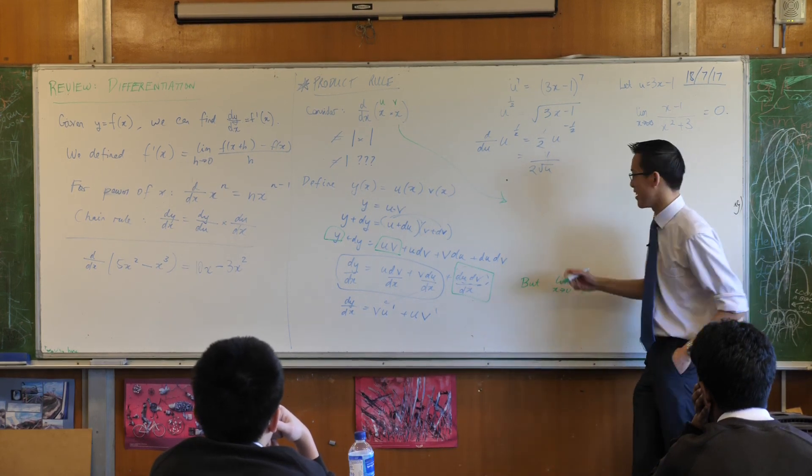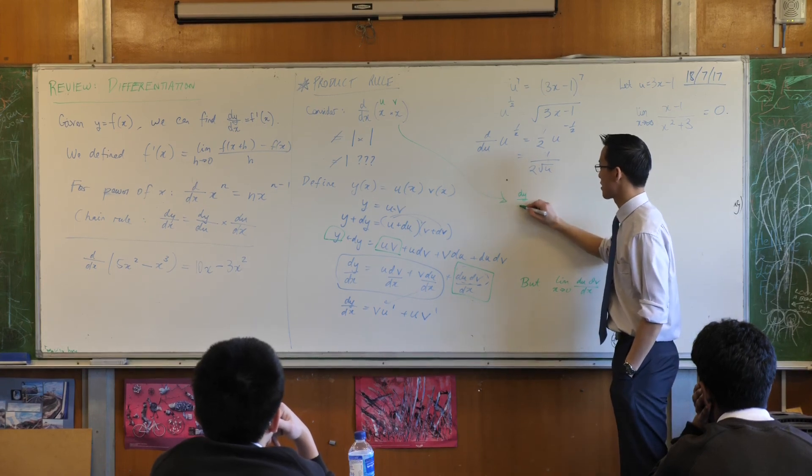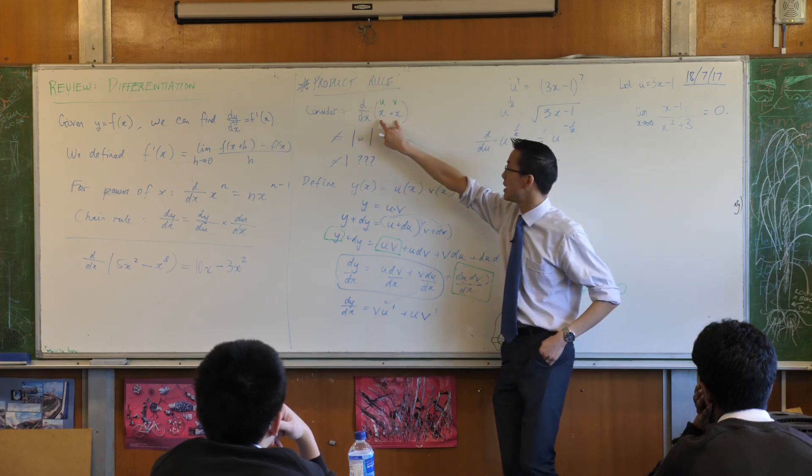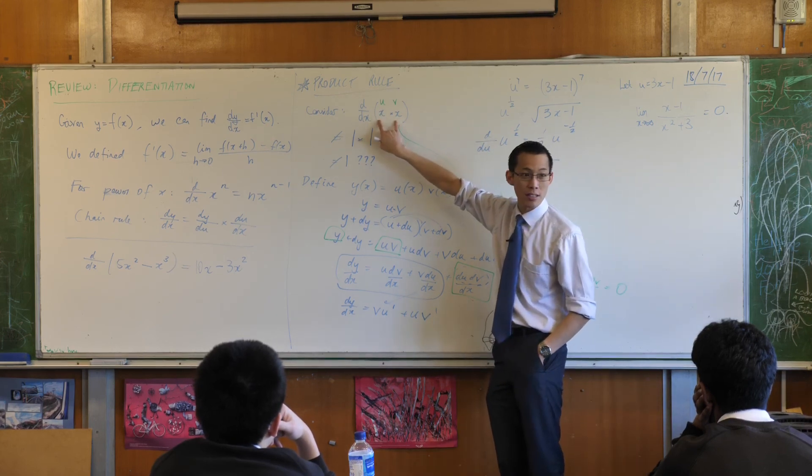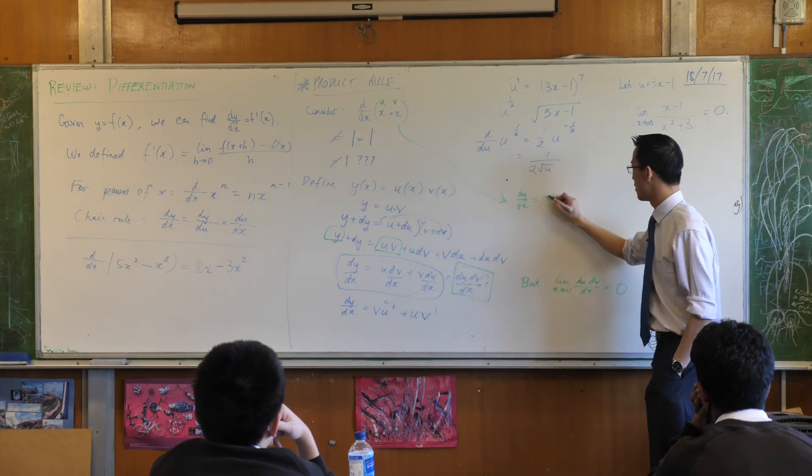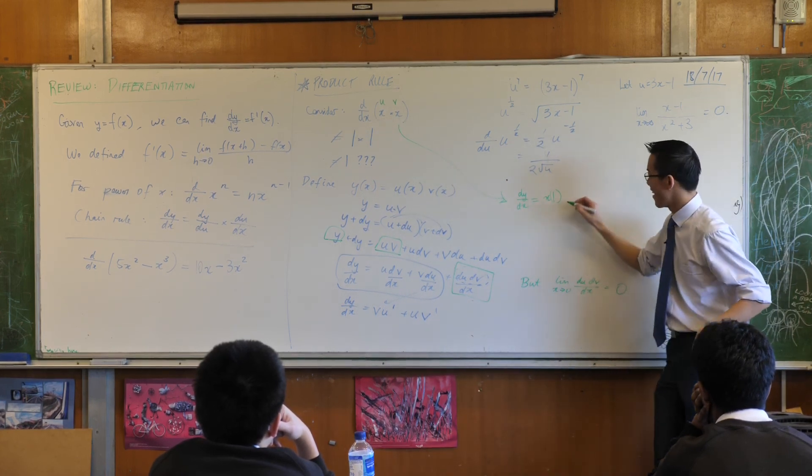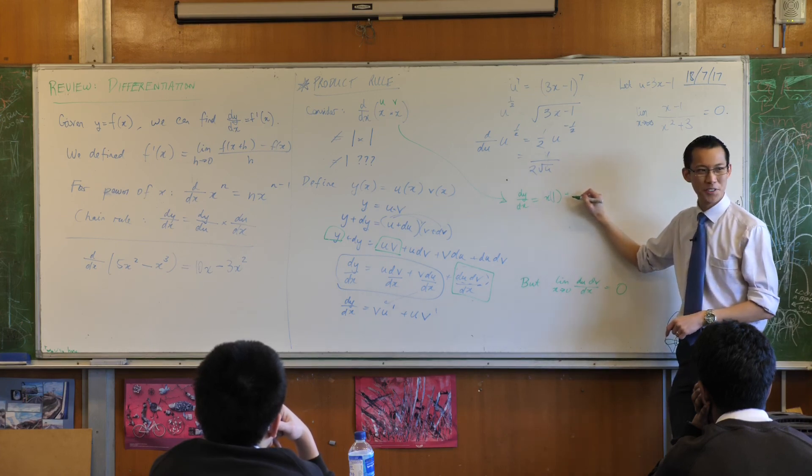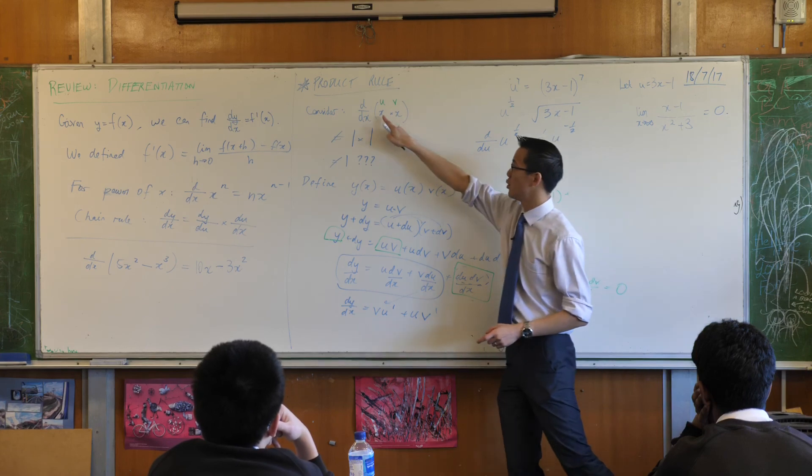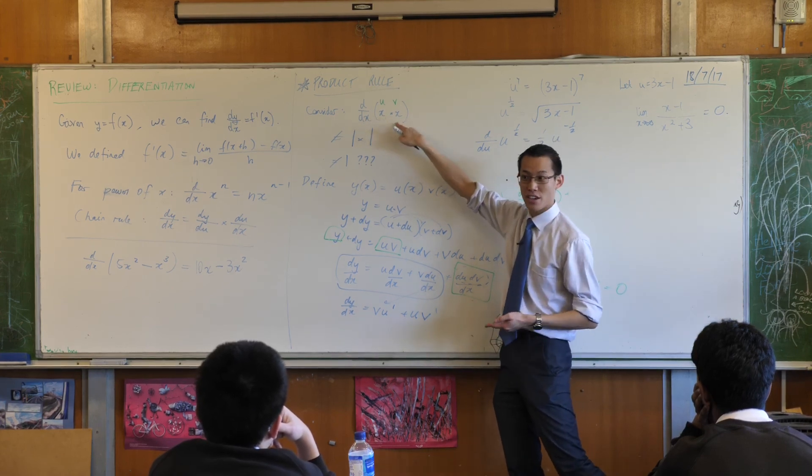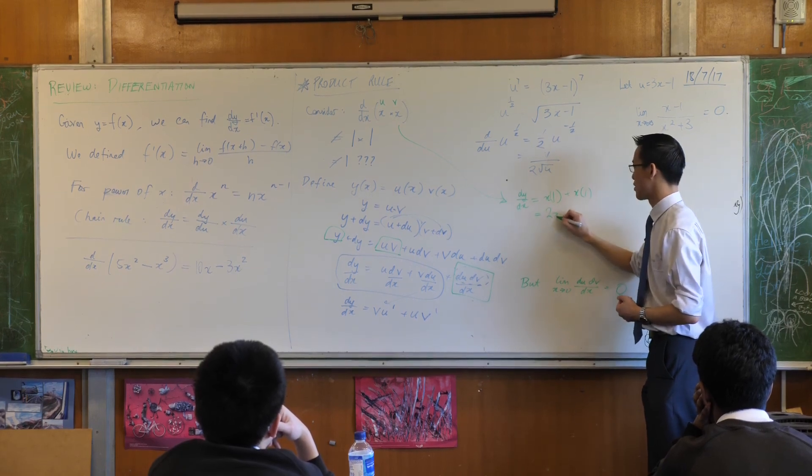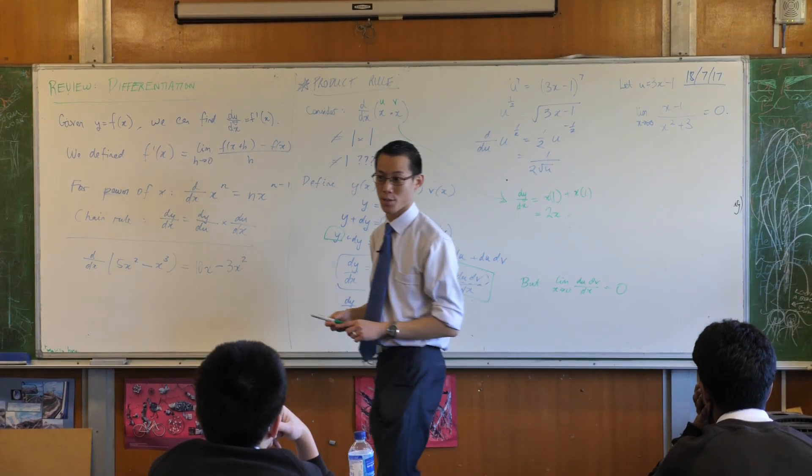So if I now consider these, if I say dy/dx is equal to v times u dash. What's v times u dash in this case? It's x times 1. Like so. That's the v times u dash. So now I do the u times v dash. Well, u is x and v dash is still 1, which thankfully gives us the result we knew we were supposed to get in the first place.